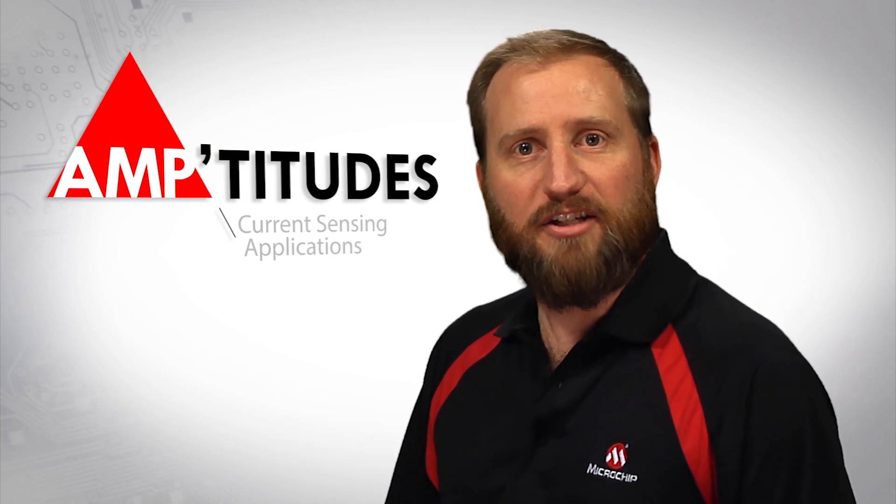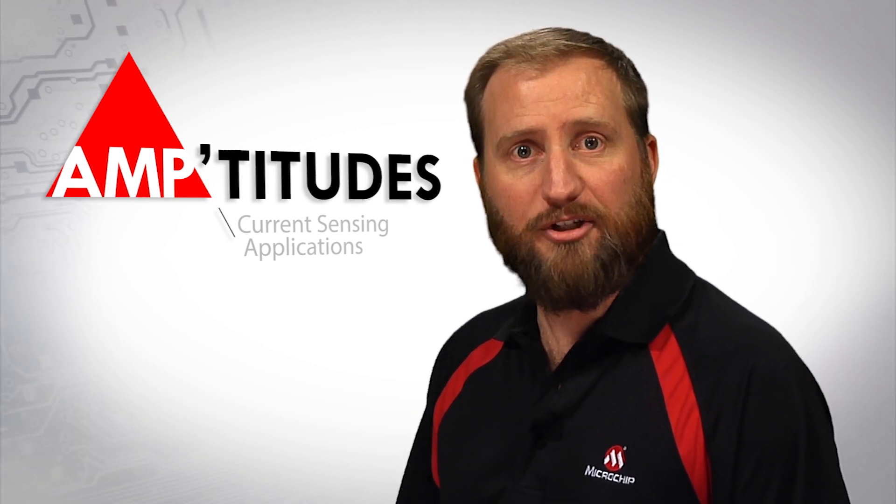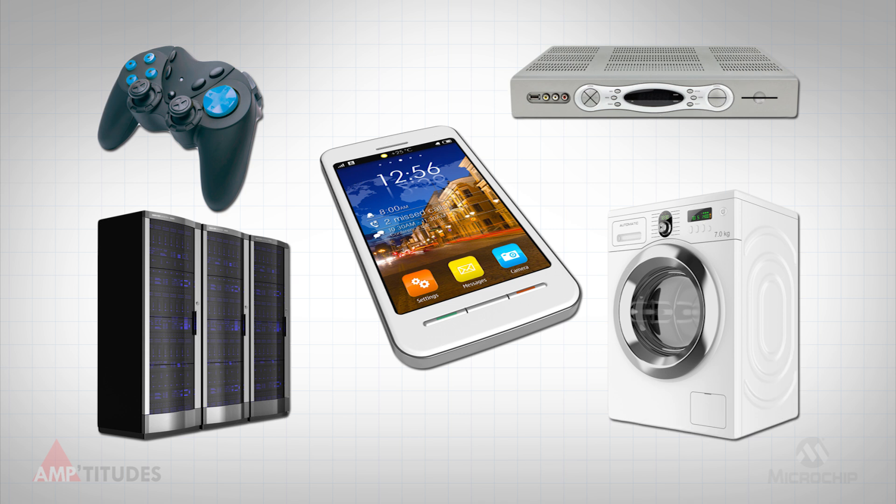This Amptitudes edition will cover the viewer-recommended topic of using amplifiers in current sensing applications. The need to closely monitor currents in today's electronics has increased over the years, as energy efficiency and safety have become major concerns. This video will focus specifically on the use of a shunt resistor to monitor current.